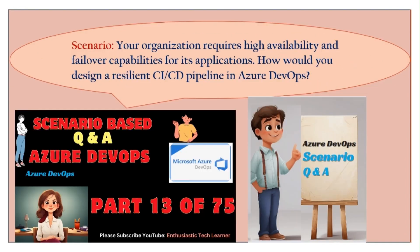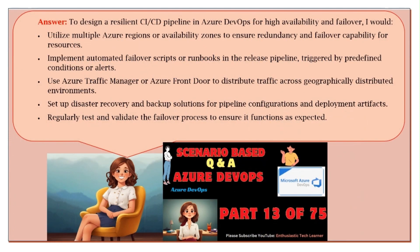Scenario thirteen: your organization requires high availability and failover capabilities for its applications. How would you design a resilient CI/CD pipeline in Azure DevOps? To design a resilient CI/CD pipeline for high availability and failover, I would utilize multiple Azure regions or availability zones to ensure redundancy and failover capability for resources. Implement automated failover scripts or runbooks in the release pipeline, triggered by predefined conditions or alerts.